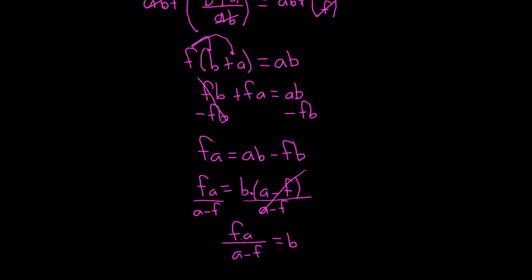Wow, that was a lot of work. And we could leave our answer like this. But it might be better to write the b on the left hand side. So little b is equal to fa. That's all divided by a minus f. And that would be the final answer. I hope this video has been helpful.